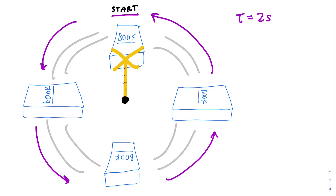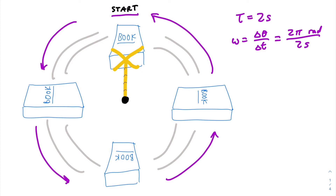An approach that may seem familiar would be: angular velocity is equal to change in angle over change in time. In this case, it would be 2π, because it's going a full rotation, divided by 2 seconds, which gives you π radians per second.